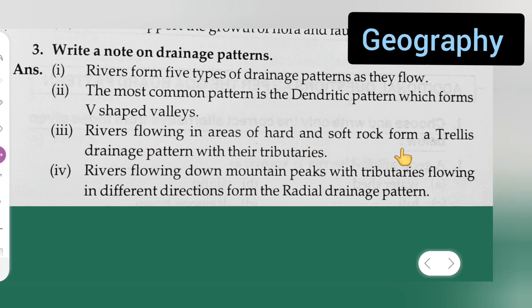hard and soft rock form a trellis drainage pattern with their tributaries. Fourth point says that rivers flowing down mountain peaks with tributaries flowing in different directions form the radial drainage pattern. So this is the answer to today's question.